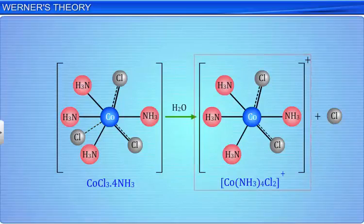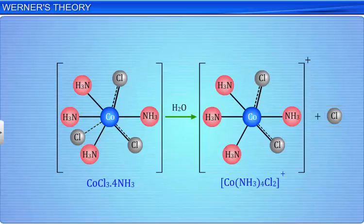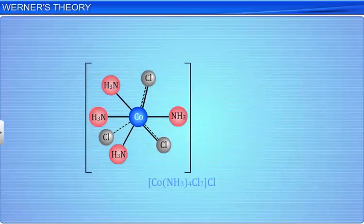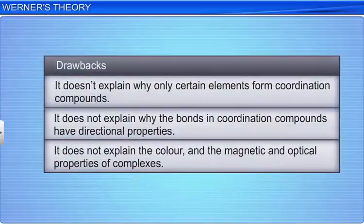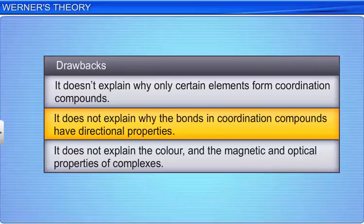Although Werner's theory successfully explains the bonding features in coordination compounds, it suffers from some drawbacks. It doesn't explain why only certain elements form coordination compounds. It does not explain why the bonds in coordination compounds have directional properties. It does not explain the color and the magnetic and optical properties of complexes.